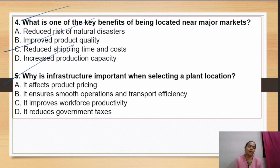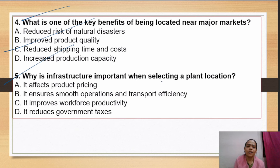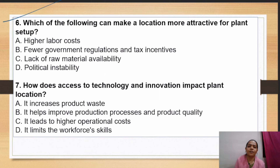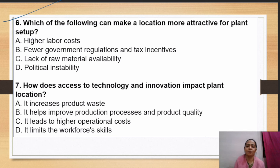Why is infrastructure important when selecting a plant location? Infrastructure is important because it ensures smooth operations and transport efficiency. Which of the following can make a location more attractive for plant setup? Tax incentives and favorable government regulations make a location more attractive. Higher labor cost, lack of raw material availability, and political instability are negative factors. Government regulation and tax benefits are what make the location positive and attractive.